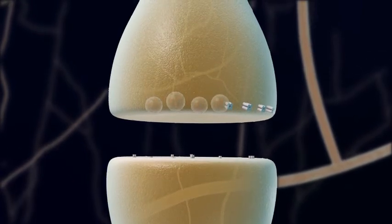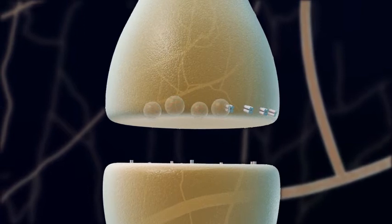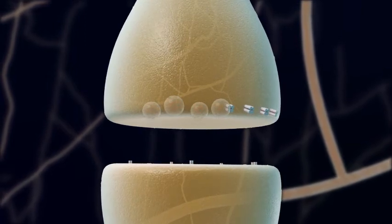An action potential causes voltage-gated calcium ion channels to open in the presynaptic terminal. The influx of calcium ions prompts synaptic vesicles to release neurotransmitters via exocytosis.